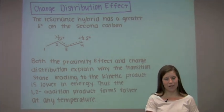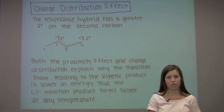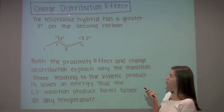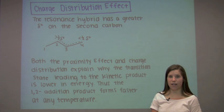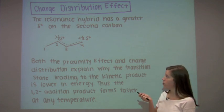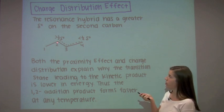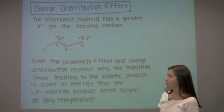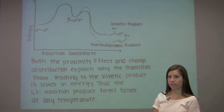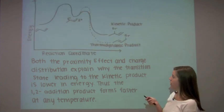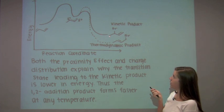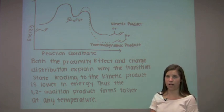Now I'm going to explain the second factor influencing why the kinetic product is formed faster, which is the charge distribution effect. The allylic carbocation intermediate has a greater partial positive charge on the second carbon than the fourth carbon. Thus, the bromide ion has a greater attraction to the second carbon. Both the proximity and charge distribution effects explain why the transition state leading to the kinetic product is lower in energy. Therefore, the kinetic product is formed faster.